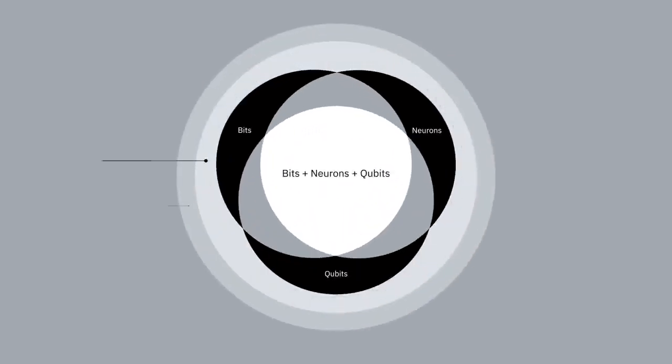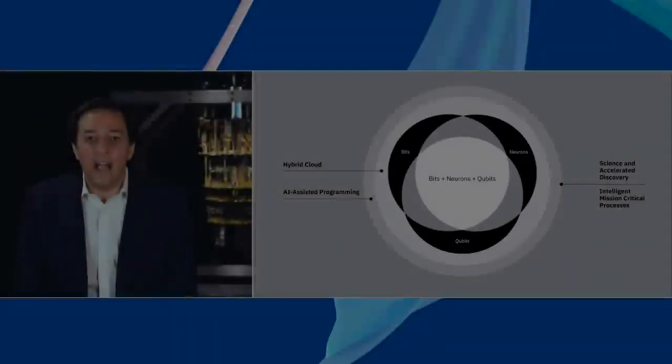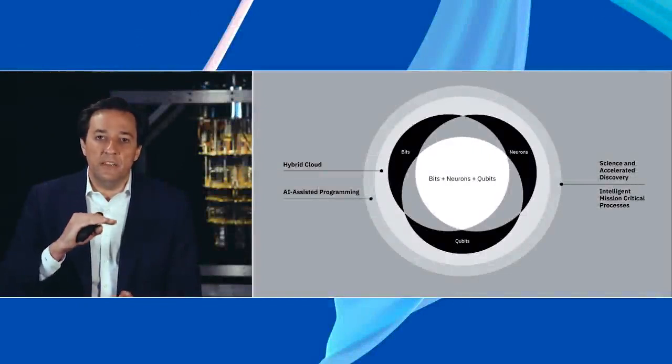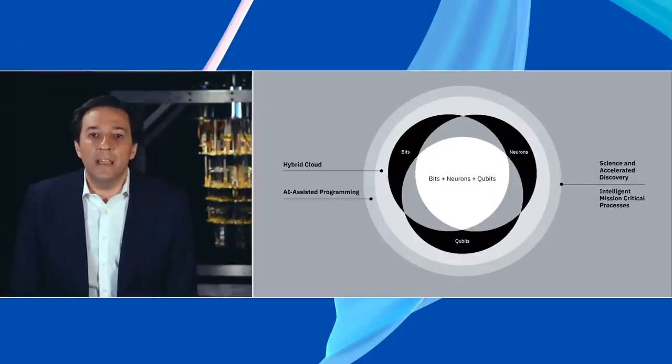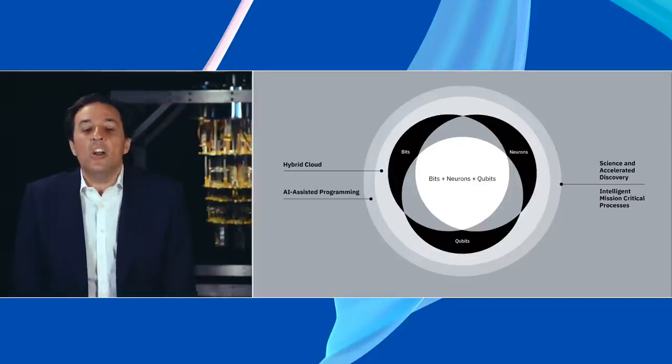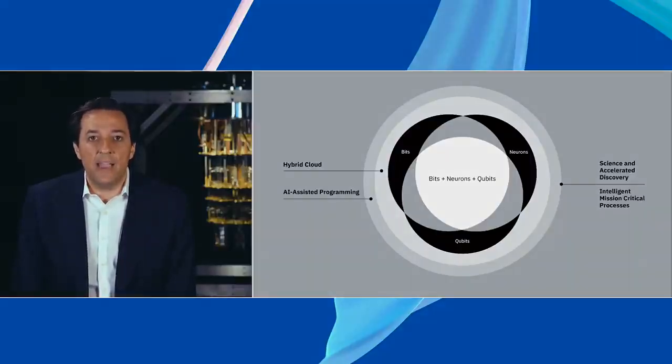Now, this convergence is going to be orchestrated through a hybrid cloud architecture. And on top of it, we are going to be focused. To mask the complexity of the underlying infrastructure, we are going to be assisted by artificial intelligence in the way we program, AI-assisted programming. The consequence of all of this coming together will be nothing short of a revolution on how science itself is practiced and the rate at which we could perform accelerated discovery, and a whole new class of intelligent mission-critical applications. Thank you.